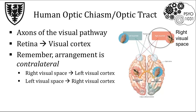This area of crossover is called the optic chiasm, and you can see it right here on the diagram. Before the axons reach the optic chiasm, they travel in the optic nerve, shown here, while after the optic chiasm, when the pathway is embedded in the brain, it's called the optic tract, shown here.